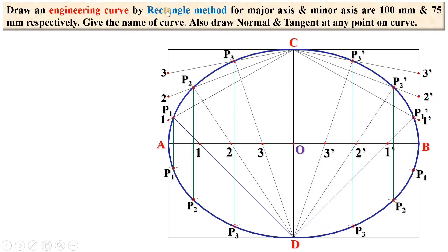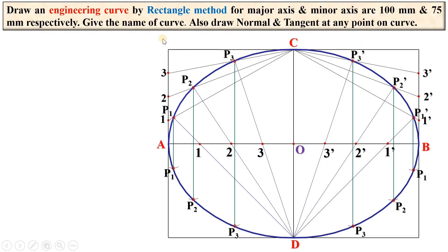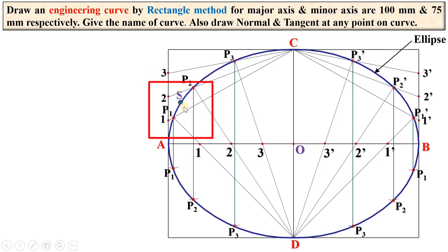So far we have completed the engineering curve by the rectangle method — it is called the rectangle method because we initially drew a rectangle. Give the name of the curve: it is an ellipse. Next, draw the normal and tangent at any point on the curve. Assume a point S on the ellipse where you want to draw the normal and tangent.